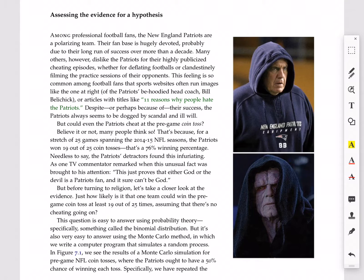The question is, how likely is it that one team could win the pre-game coin toss at least 19 times in a stretch of 25 games, assuming that there's no cheating going on? Now, we could use probability theory to answer that question very easily. But it's also equally straightforward, if not more so, to use the Monte Carlo method.